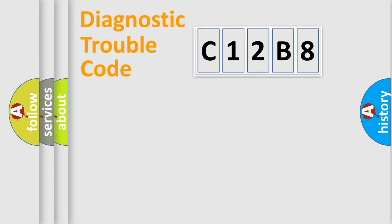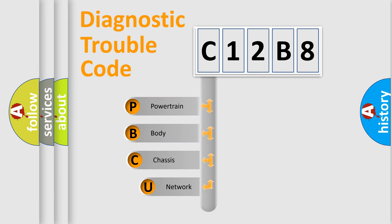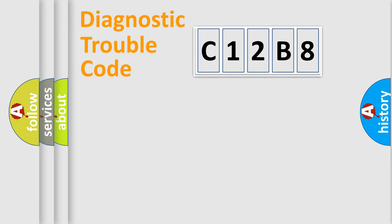Let's look at the history of diagnostic fault code composition according to the OBD2 protocol, which is unified for all automakers since 2000. We divide the electrical system of an automobile into four basic units: Powertrain, Body, Chassis, and Network.